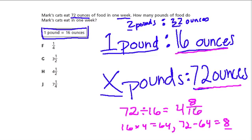So 16 goes into 72 four times with a remainder of 8 out of 16. The goal is to find how many 16s go into this number. Four of them go into 72, and there's 8 out of 16 left over, or half of 16, which is 4 and a half.